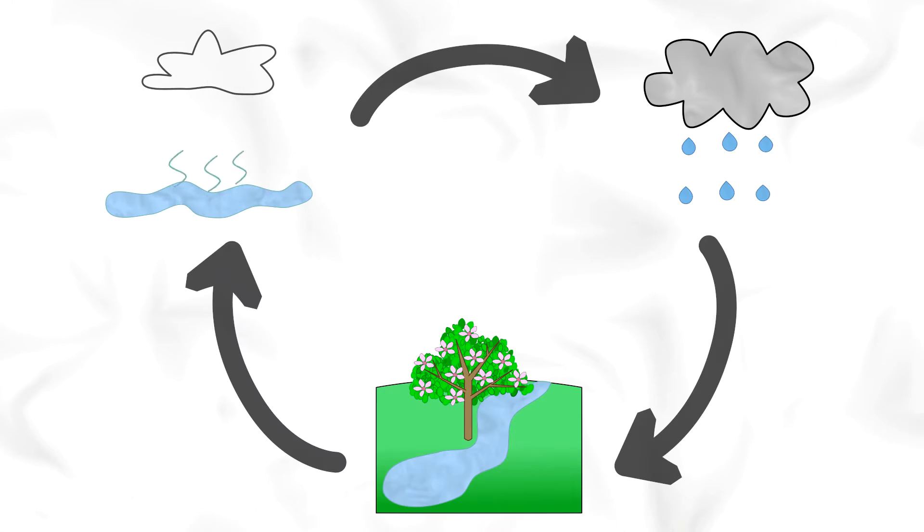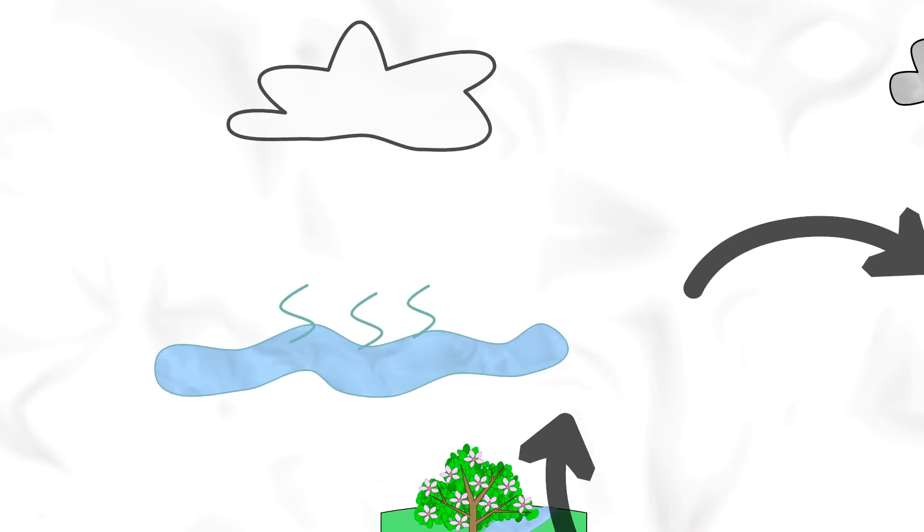Let's learn about the water cycle. Water goes around and around this cycle. Did you know there's water in the air around you? You can't see it, but it's there. And in this form, water is called water vapor.